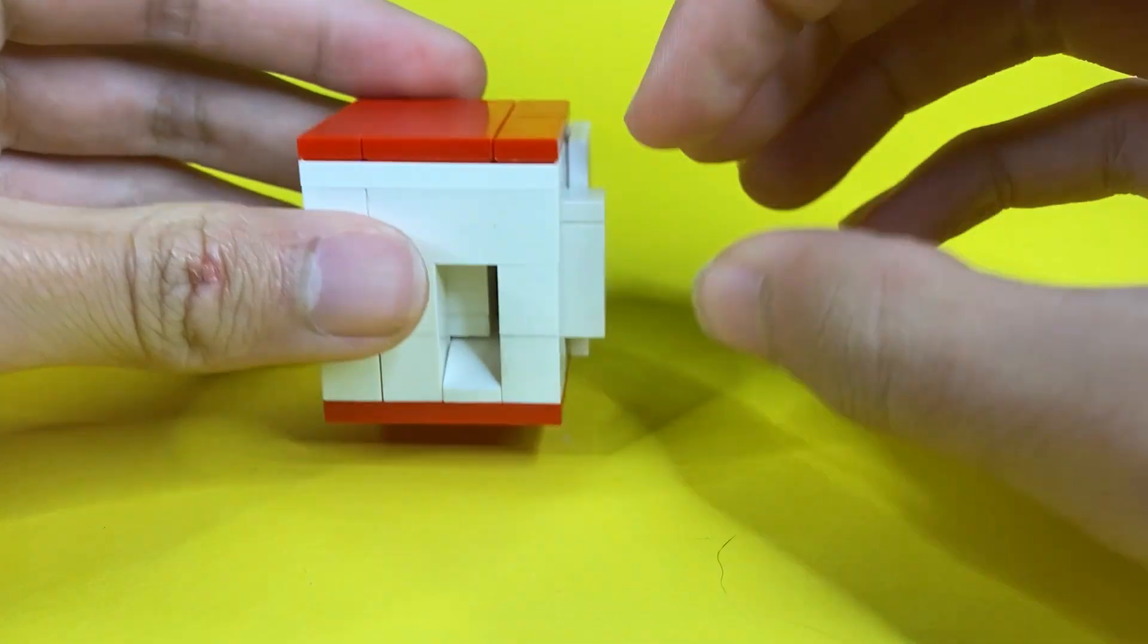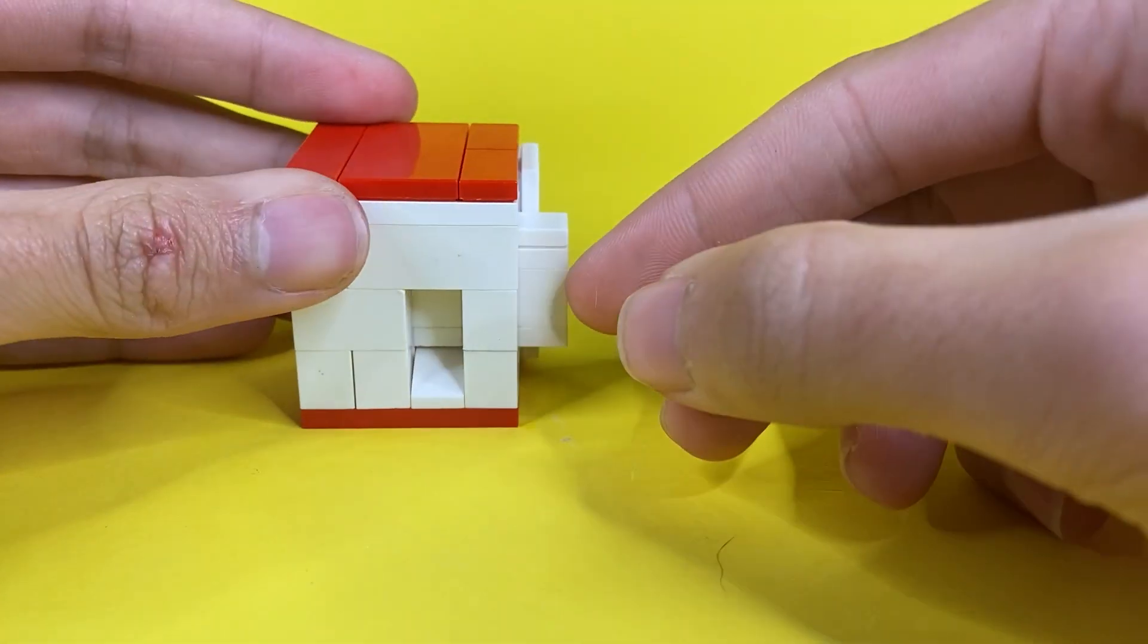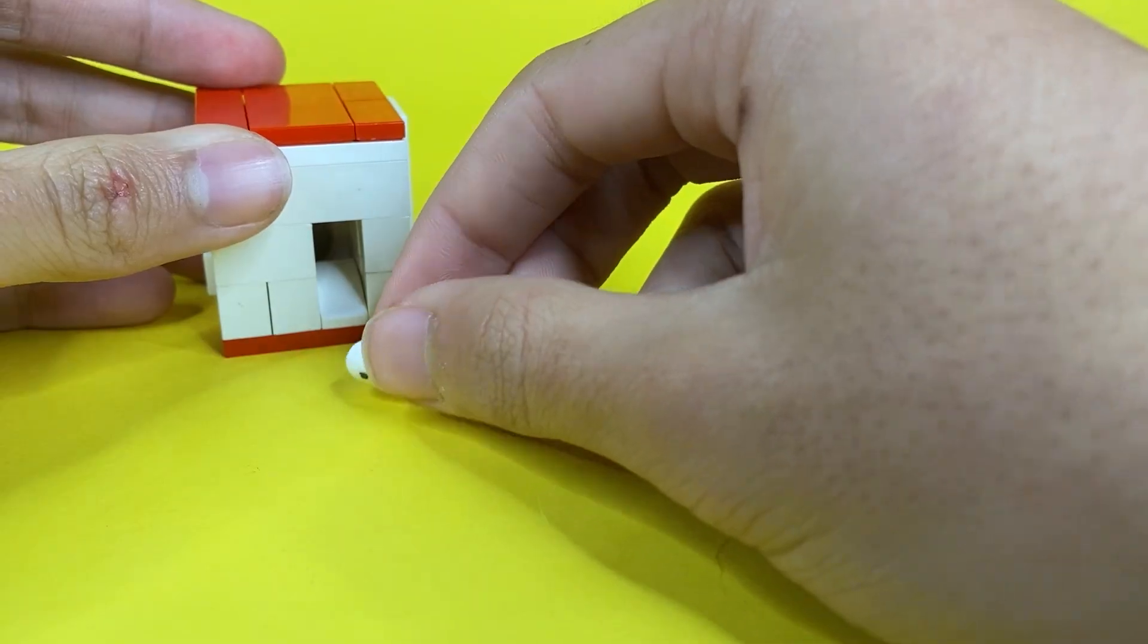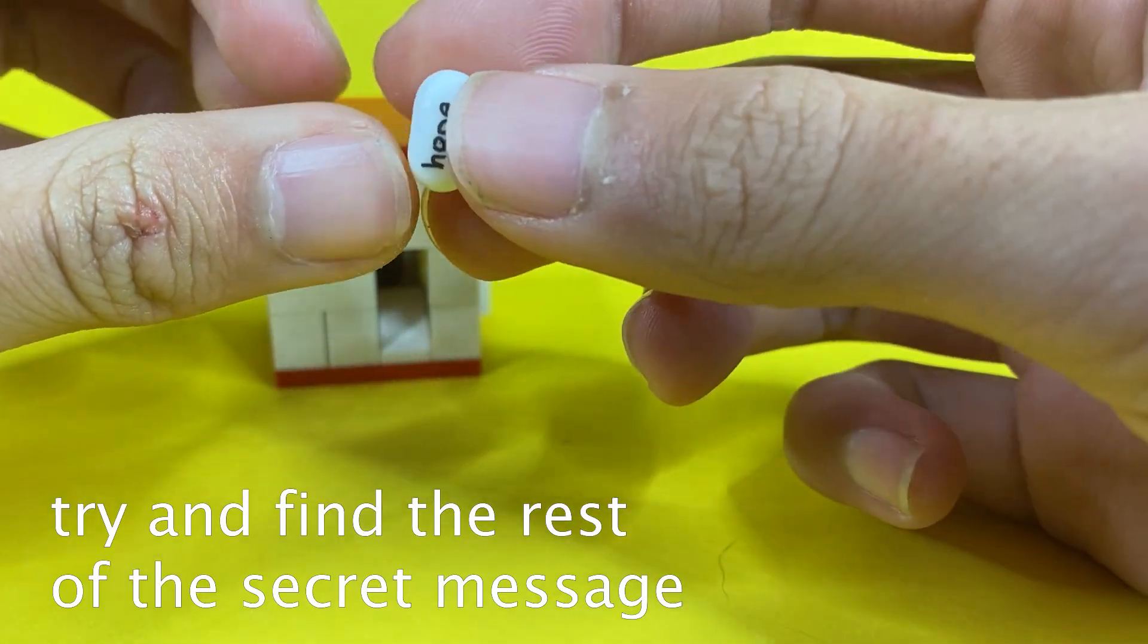This candy machine holds two rounds, which is pretty impressive for its small size. This tic-tac has another word on it. I hope. Is this some sort of a secret message?